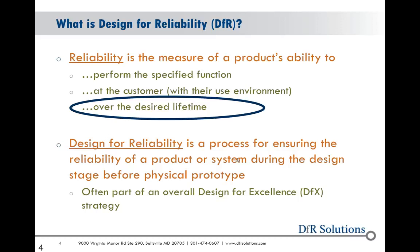What is design for reliability? It's a measure of a product's ability to perform a specified function at the customer in their use environment — which can be a pretty wide range — and over the desired lifetime. That's an important point because each of your customers has their own expectation for how long the product should survive in their environment. Design for reliability is a process for ensuring reliability during the design stage, before physical prototypes.